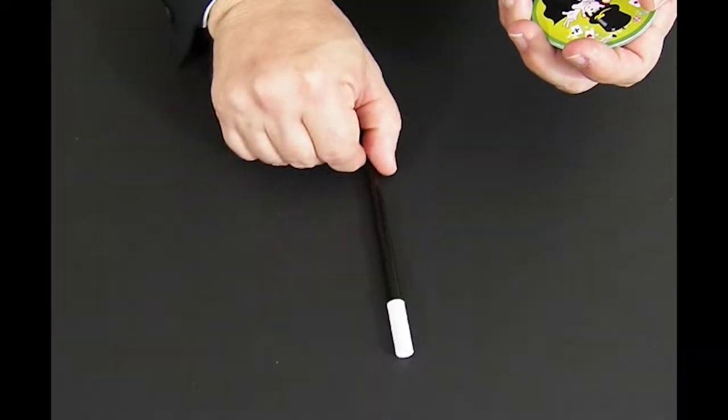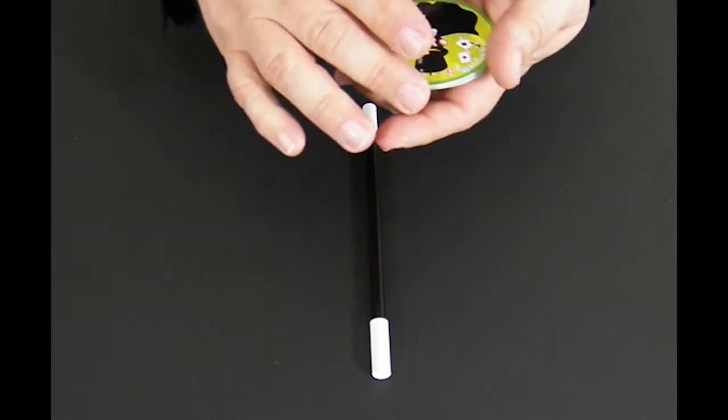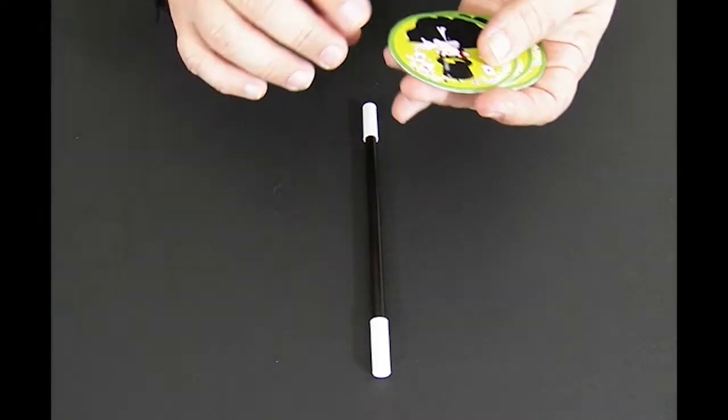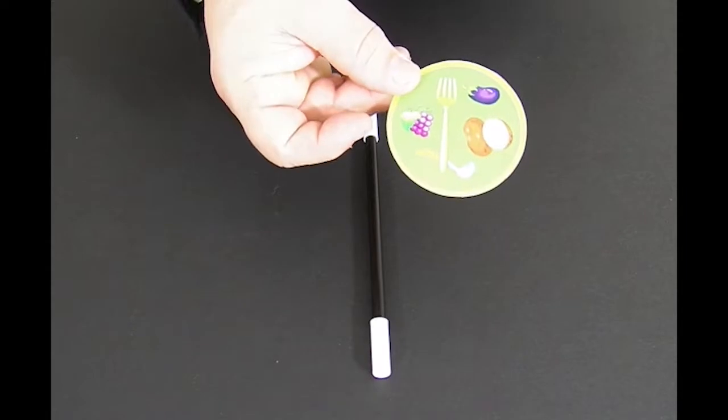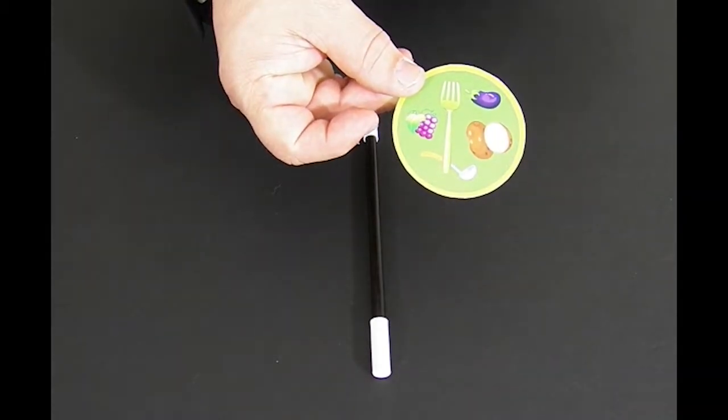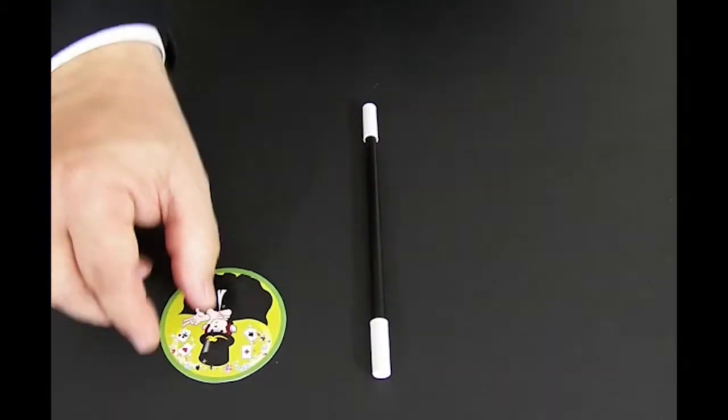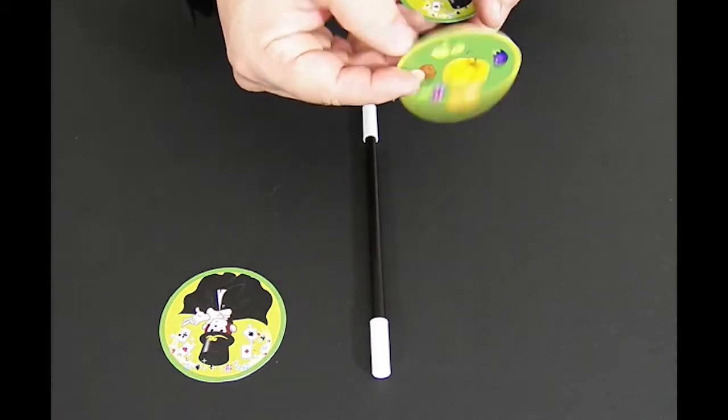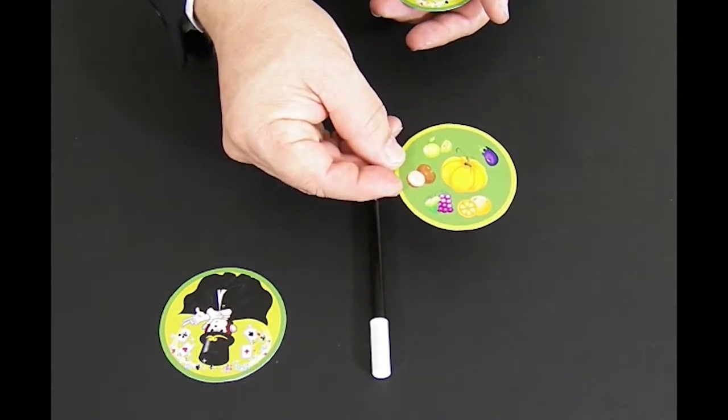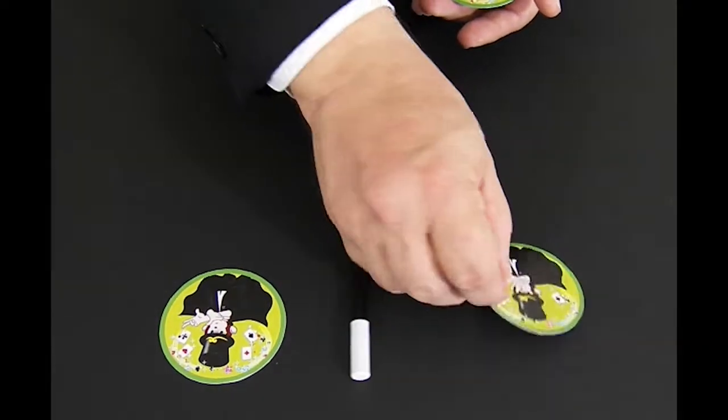And all I want you to do is tell me whether or not you have seen your picture on the card or not. We'll take a look at this. Is your picture on that card, yes or no? Yes. Yes. I'll place the card down over here. Is your picture on the card, yes or no? No. No. I'll place it down over here.